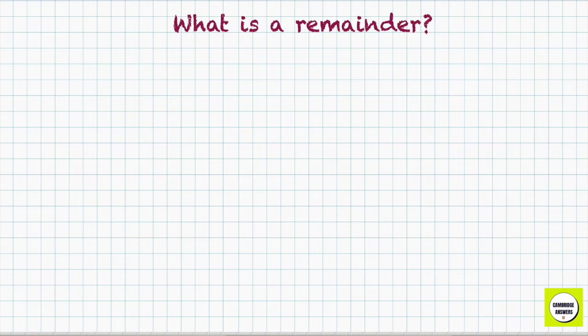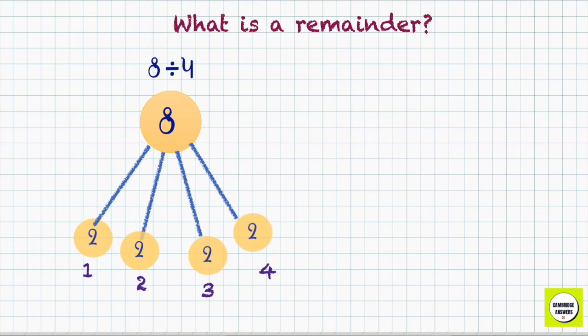What is the remainder? Let's take the division problem 8 divided by 4. 8 needs to be divided equally into 4 groups. When we divide 8 equally in 4 groups, we get 2 in each group. 2, 4, 6, 8.